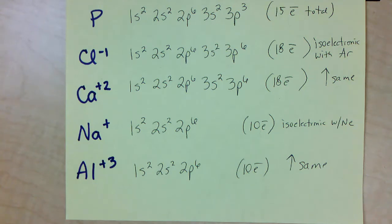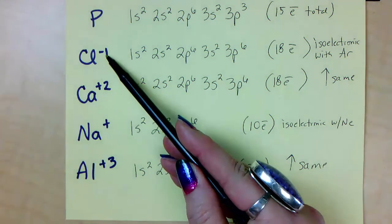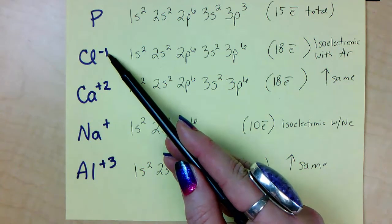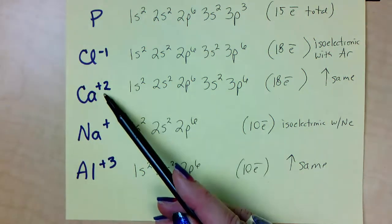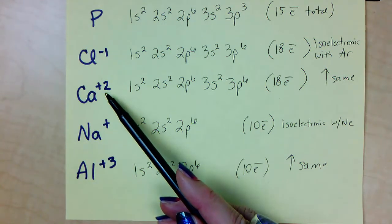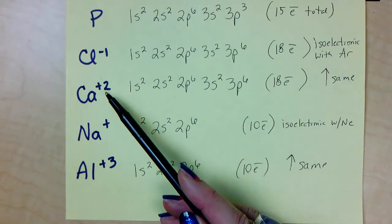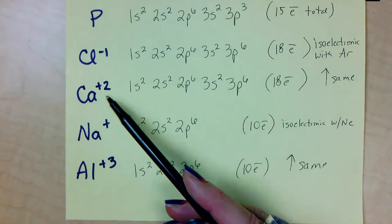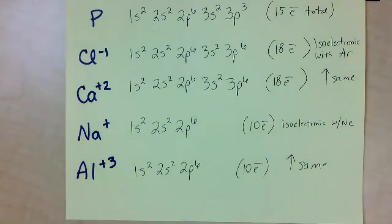Remember: if an ion has a negative charge, it gained electrons because electrons are negative, so there are more electrons than protons. If it has a positive charge, there are more protons than electrons, so electrons were lost. I hope that video was helpful for you. Keep studying and good luck.